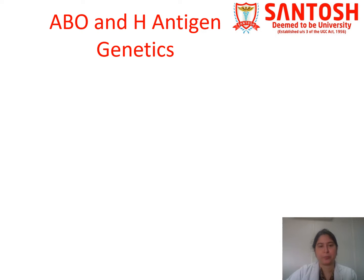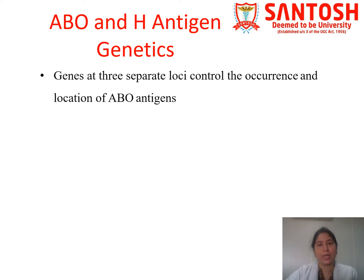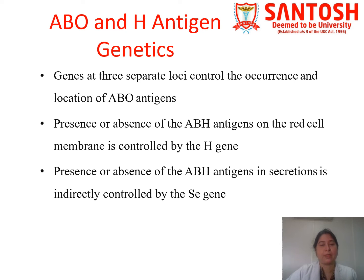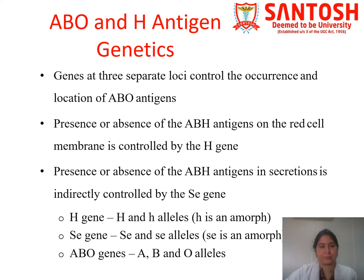Genes at three separate loci control the occurrence and location of A, B, O antigens. Presence or absence of A, B, and H antigens on the red cell membrane is controlled by the H gene. Presence or absence of A, B, and H antigens in secretions is indirectly controlled by the Se gene.